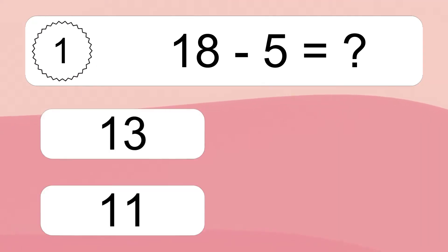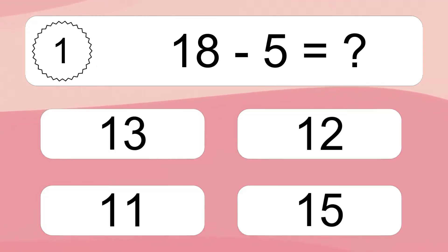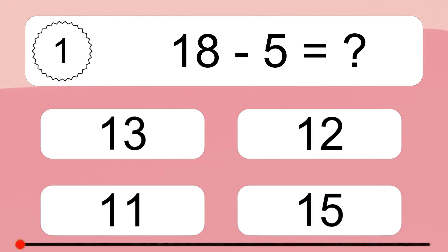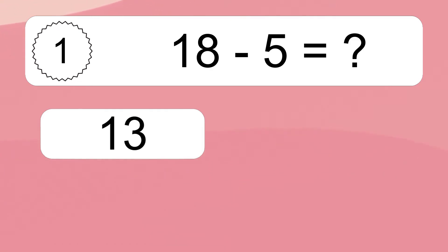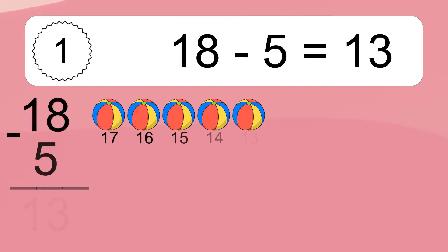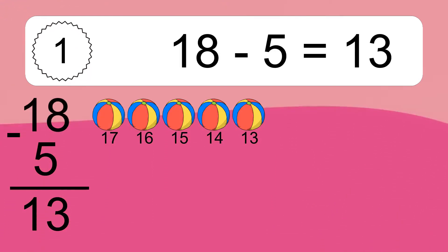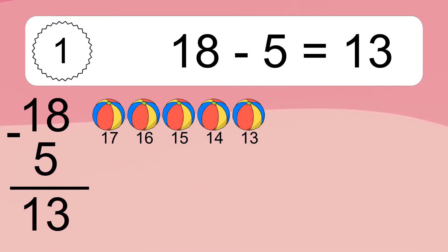18 minus 5 equals what? 18 minus 5 equals 13. Let's count it: 17, 16, 15, 14, 13.